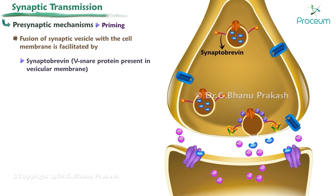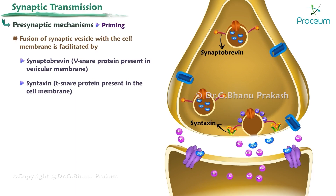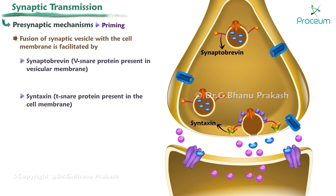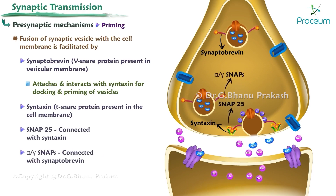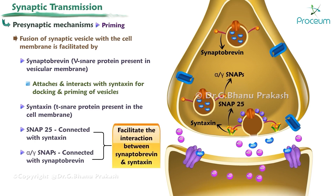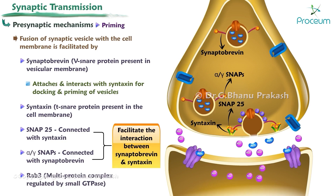Syntaxin, a t-SNARE protein present in the cell membrane, interacts with synaptobrevin for docking and priming of vesicles. Various other synaptic proteins — SNAP25, connected with syntaxin, and alpha/gamma SNAPs, connected with synaptobrevin — facilitate the interaction between synaptobrevin and syntaxin. A multi-protein complex regulated by small GTPases like Rab3 also participates in the process.